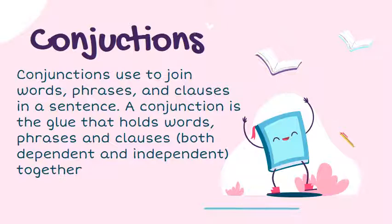Especially on clauses, the clauses are called dependent and independent. Jadi conjunction adalah kata yang digunakan untuk merekatkan atau merangkai dua kata, dua frase, ataupun dua clause atau lebih dalam satu kalimat. Khusus untuk clause, maka clause yang direkatkan adalah klausa dependent dan independent.